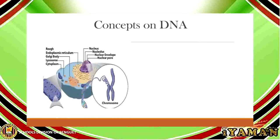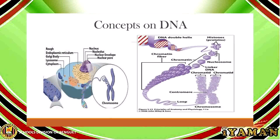The nucleus has a nuclear membrane, which separates its components from that of the cytoplasm. Inside the nucleus, we have thread-like structures called chromatin. This chromatin actually consists of DNA and histone proteins. The DNA is found in the chromatin, and once this chromatin condenses, it is known as the chromosome, which carries the genetic material.